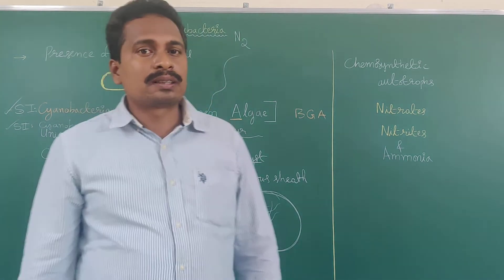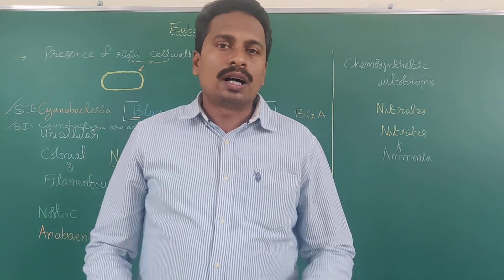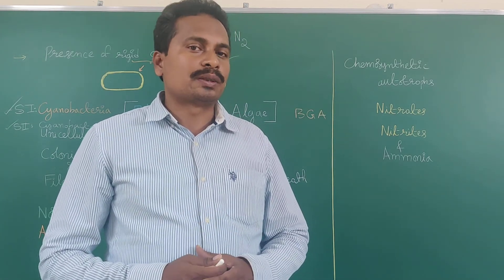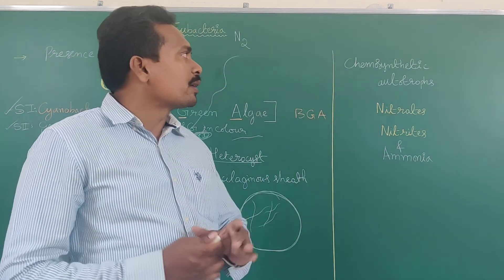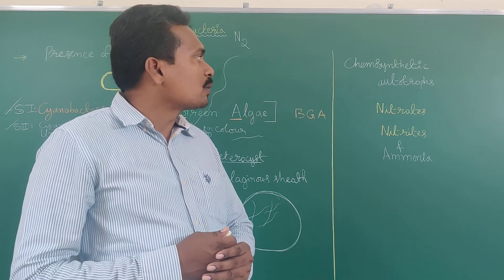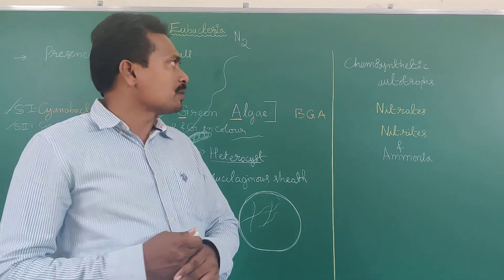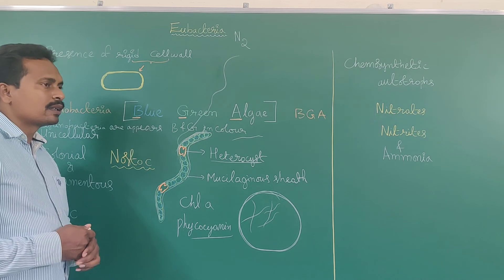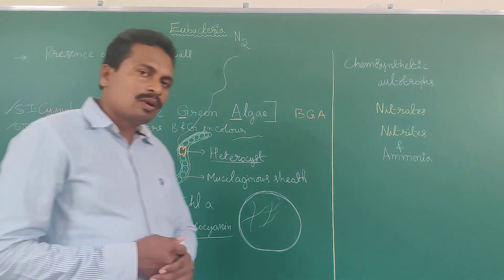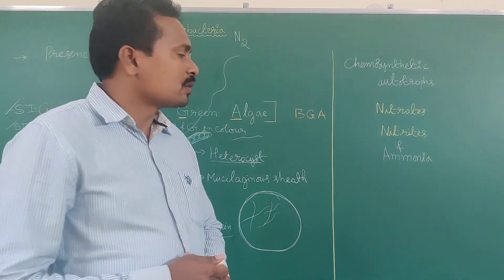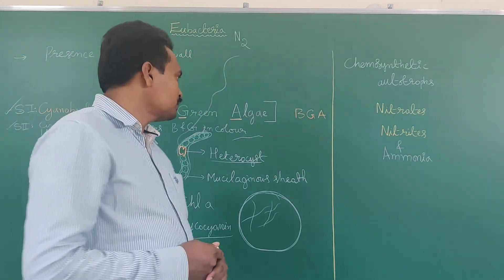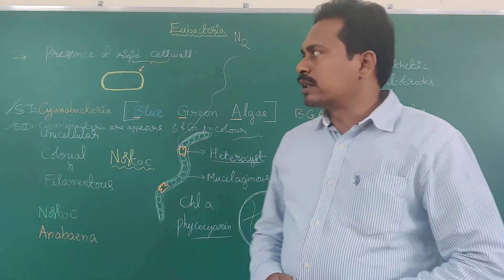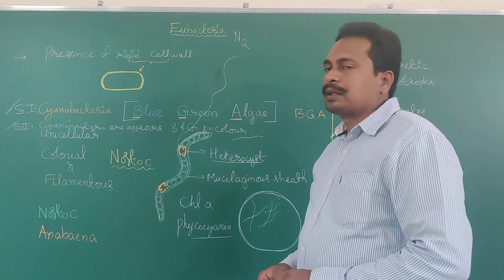Autotrophs: in the previous class you learned about autotrophs — photosynthetic autotrophs and chemosynthetic autotrophs. Some blue-green algae are involved in photosynthetic autotrophic mode of nutrition, and some are involved in chemosynthetic autotrophic mode of nutrition. Next class we will discuss about the economic importance of Eubacteria.